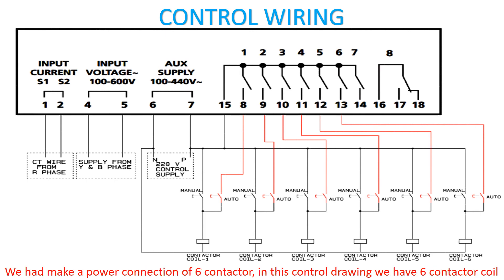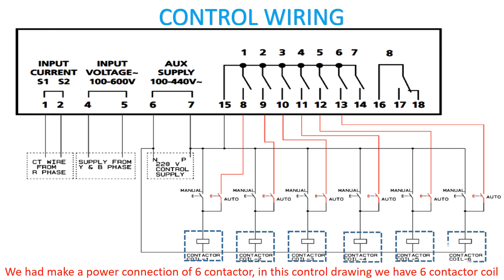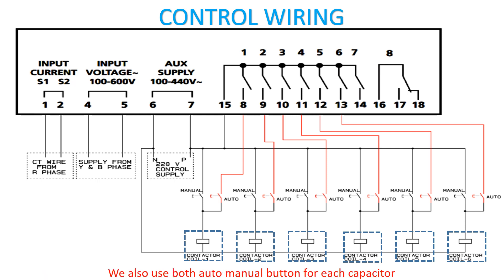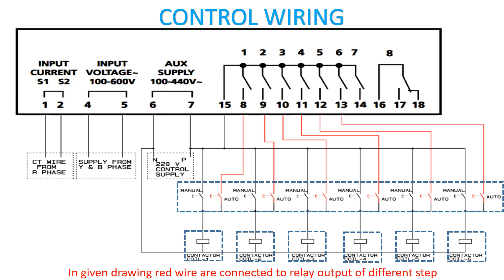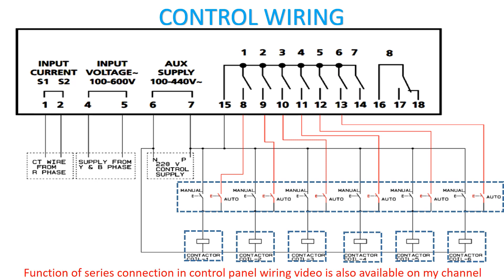We have made a power connection of 6 contactors, so in this control drawing we have 6 contactor coils. We also use both auto and manual buttons for each capacitor. The manual button is connected from the main control phase, and the auto button is connected with the relay of APFC. In the given drawing, red wires are connected to relay output of different steps. Auto and manual buttons are connected in series with the contactor coil.